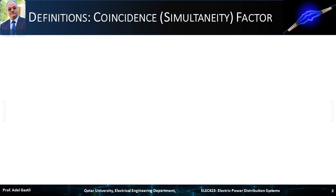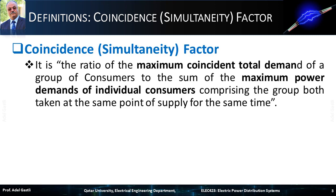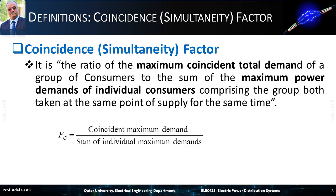Let's define what a coincidence or simultaneity factor is. It is defined as the ratio of the maximum coincident total demand of a group of consumers to the sum of the maximum power demands of individual consumers comprising the group, both taken at the same point of supply and for the same time. The coincidence factor is calculated using this equation. Note that the coincidence factor is actually the inverse of the demand factor.